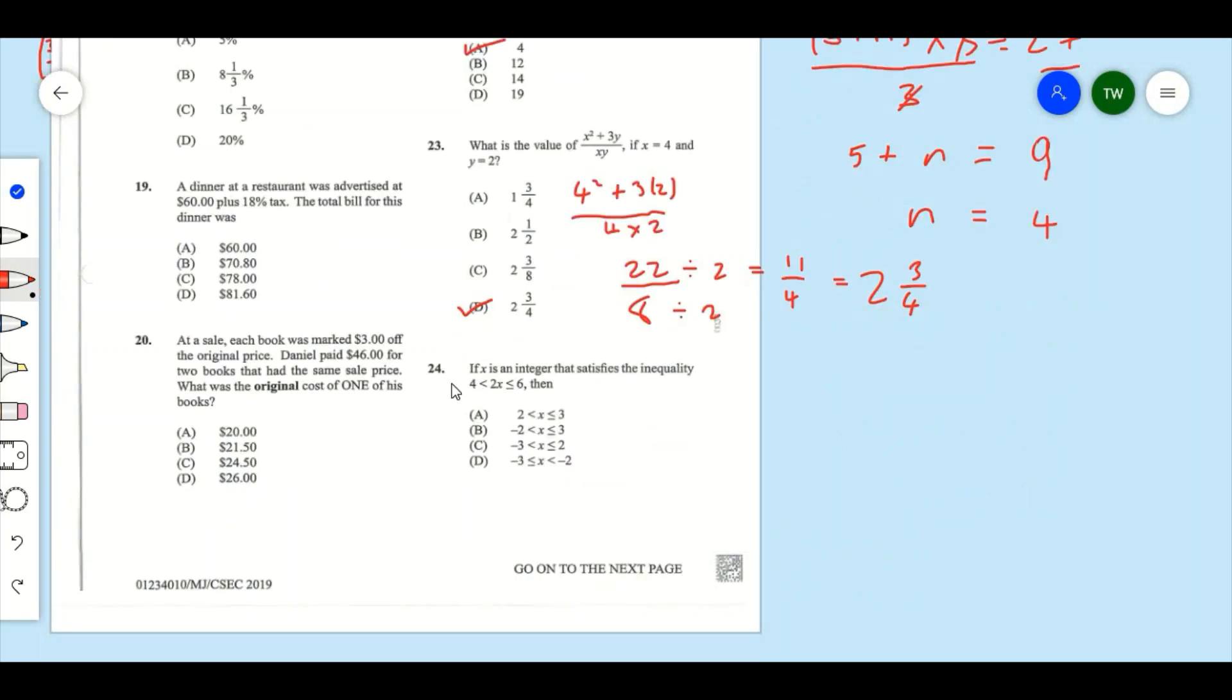Question 24: If x is an integer that satisfies the inequality 2x greater than 4 and 2x is less than or equal to 6, then x is? In order to get x by itself, we need to divide each number by 2. So if you divide each number by 2, 4 divided by 2 will give you 2, 2x divided by 2 will give you x, and 6 divided by 2 will give you 3. So our answer here is going to be A.